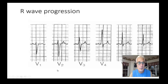R-wave progression. Notice in V1 through V6, the R-wave should get bigger, bigger, bigger, and then it kind of levels off a little bit. That's normal R-wave progression.